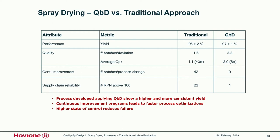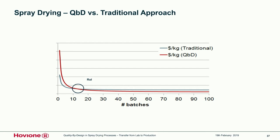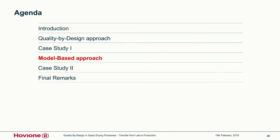With that, the word is passed to Jao, who will talk about the model-based approach. Hello, everyone, and thanks for that great and thorough explanation on the QbD approach. I will pick on the last slide to introduce the second part of this webinar. First, let me introduce the company: Hovium is a contract manufacturing organization that provides product services from the early stage of process development up to the process performance qualification and also for commercial manufacturing. I have been working in the company for 10 years, always in product technology.